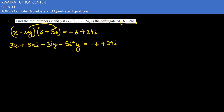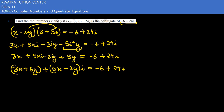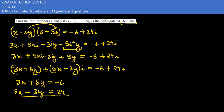So minus 5y squared — y would be nothing but plus 5y. Because 3x plus 5y will be equal to minus 6, since the real number part is 3x plus 5y and the imaginary number part is 5x minus 3y. So we have 3x plus 5y equals minus 6, and 5x minus 3y equals 24.